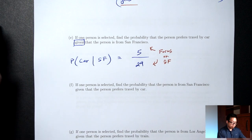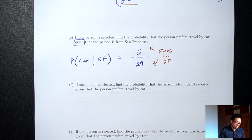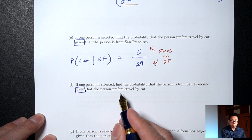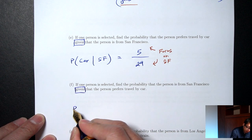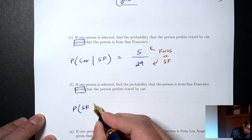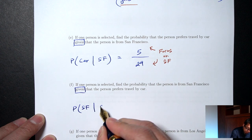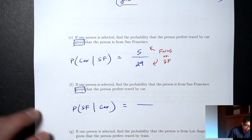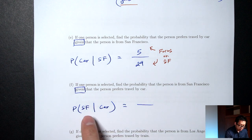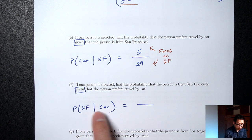Part F: if one person is selected, find the probability that the person is from San Francisco, given that the person prefers travel by car. In symbols: P(SF | car). Anytime you have conditional probability, you narrow down your table to focus on the given part, which is the second part. Here the given part is car, so I focus just on the car numbers.